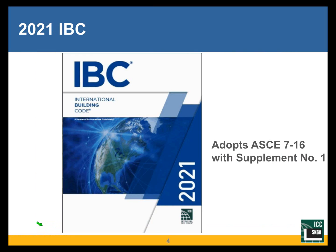The 2021 IBC, which came out in October of this year very recently, also adopts ASCE 7-16 — just like 2018 IBC — but it also adopts ASCE 7-16 with Supplement Number 1. So do not expect big structural changes in chapter 16. The only changes come from Supplement Number 1, which has about two dozen changes in the seismic provisions of ASCE 7. Maybe six, seven, or eight of them are kind of significant, and I will talk about the biggest of those changes.